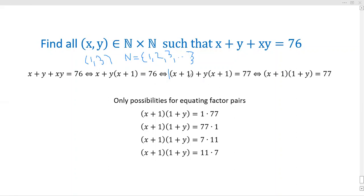But the nice thing is we can factor the (x + 1) out and we get this factor pair situation where we have (x + 1)(1 + y) = 77.